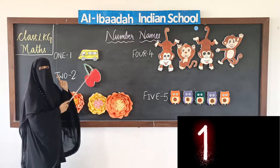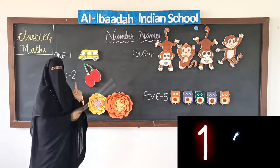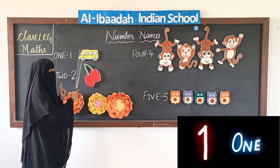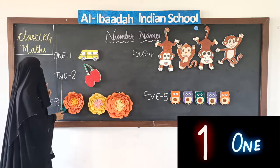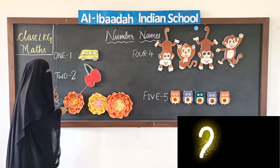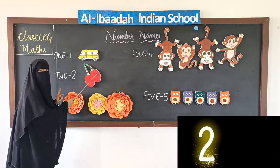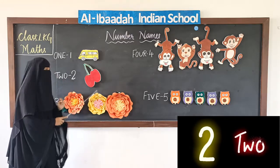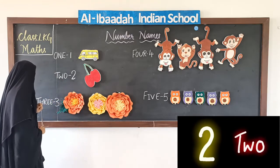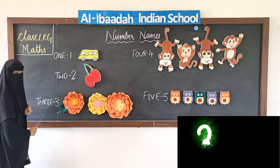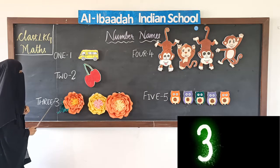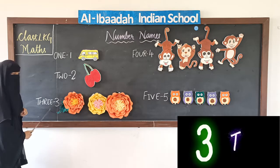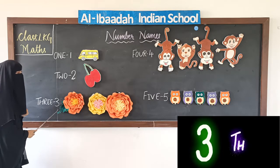Okay: O-N-E, 1. O-N-E, 1. T-W-O, 2. See 2 cherries here — T-W-O. T-H-R-E-E, 3. T-H-R-E-E, 3. See here 3 flowers: 1, 2, 3. So T-H-R-E-E, 3.